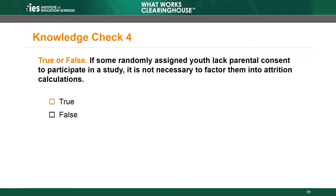This statement is false. According to the WWC, loss of sample due to lack of consent after random assignment is attrition, and the overall and differential attrition calculations should include this attrition. After a study randomly assigns individuals, it should collect data for all of them.